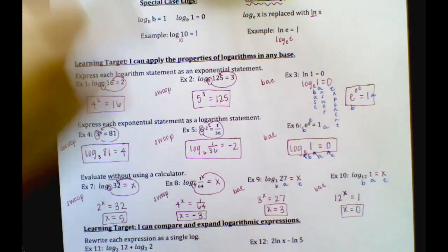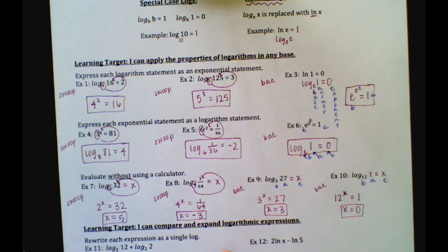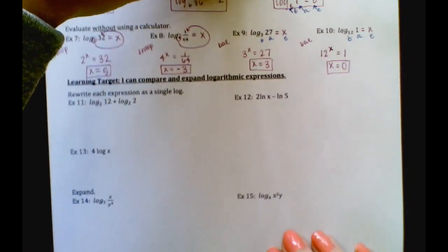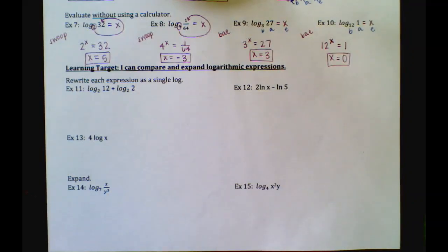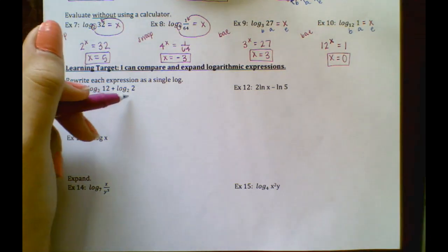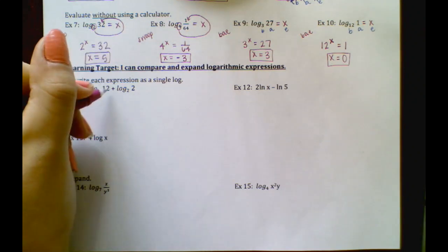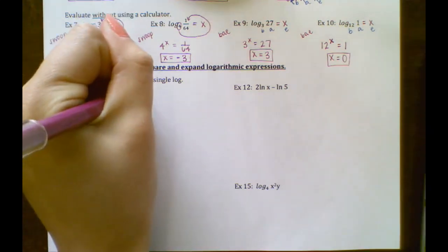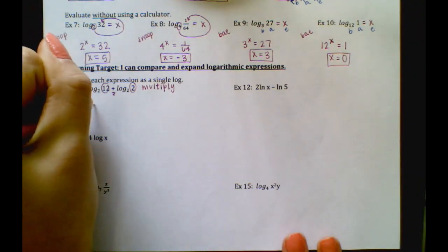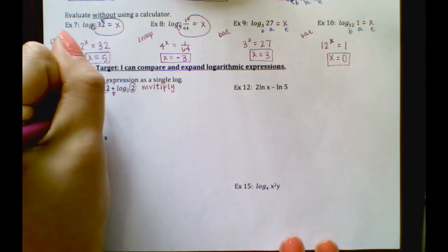So this was a review of what you did earlier — the only difference is the base of the logs. We used to have a 10 there; now we don't. Down below, we're looking at properties of logarithms and how to use those properties to either rewrite a single logarithm or expand it. Example 11: log base 2 of 12 plus log base 2 of 2. When we have the same base and we're adding the logs, we're really multiplying the two numbers.